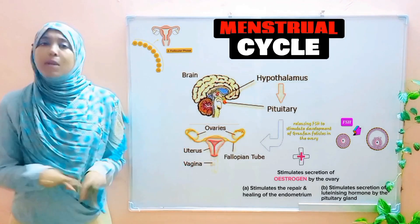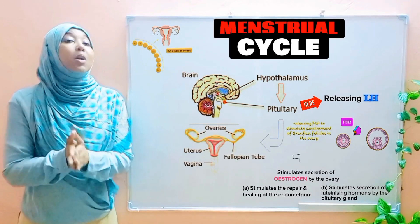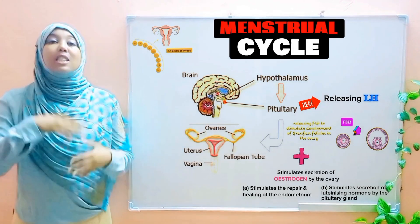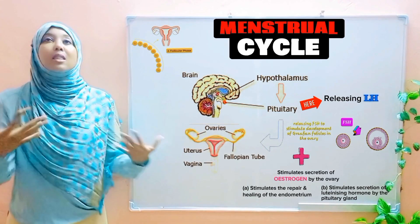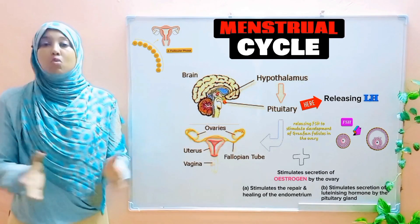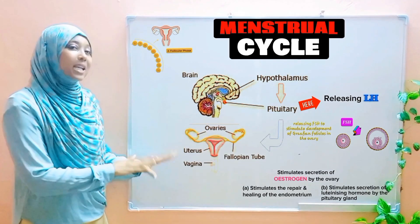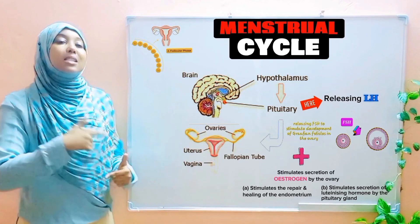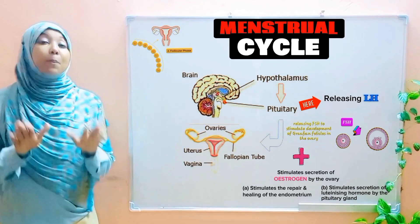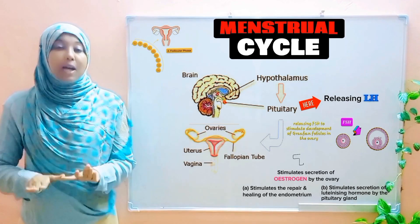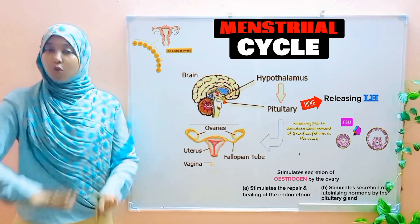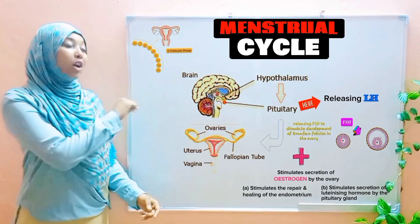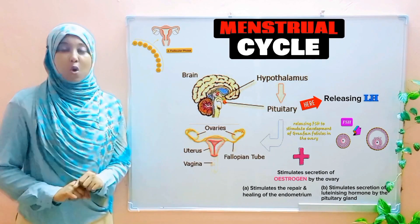Hormones are the chemical messages in our body — if the brain wants a certain process to take place, hormones are sent to trigger the organ or tissue to do so. When estrogen accumulates to certain levels, it stimulates the pituitary gland to secrete luteinizing hormone. The pituitary gland is the part of the brain responsible for secreting hormones, including both FSH and luteinizing hormone.